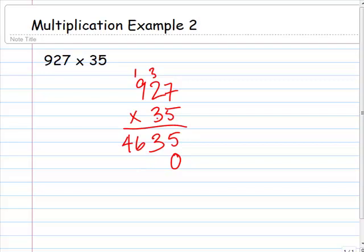So we'll start with 3 times 7 is 21. We'll carry the 2. Let's cross these other ones out from the previous multiplication. 3 times 2 is 6, plus 2 is 8. And there's no carry over there. 3 times 9 is 27.